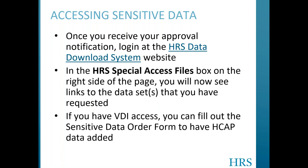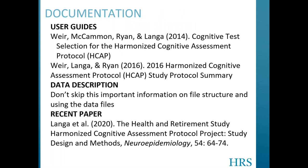Once you receive your approval notification, log into the HRS data download system website, and you'll see links to the HCAP data in the HRS special access files box on the right-hand side of the page. Note that if you already have VDI access, you can fill out the sensitive data order form to have HCAP data added to your VDI area.